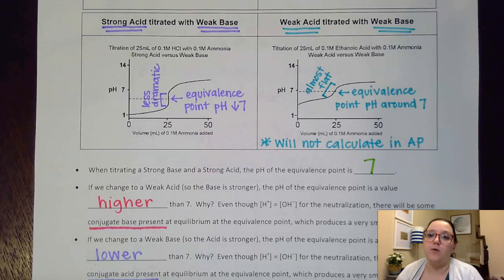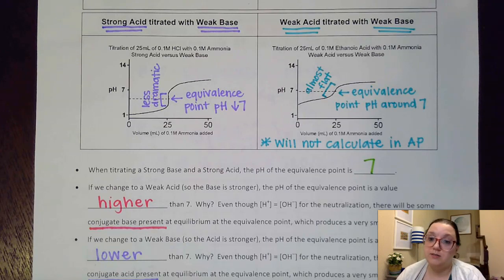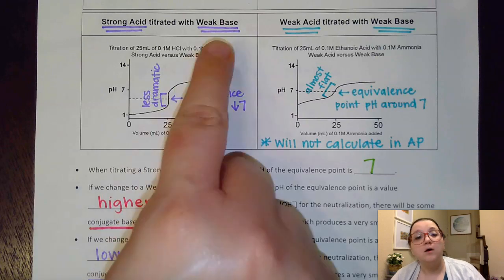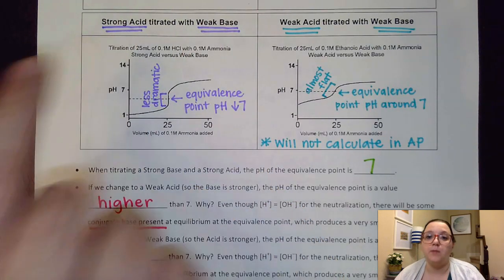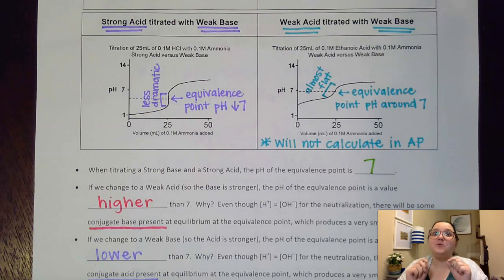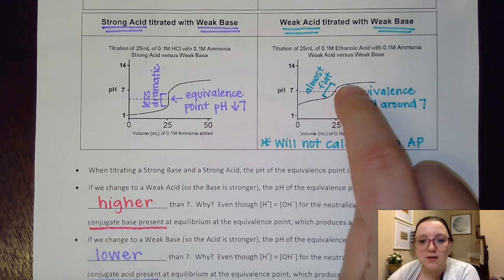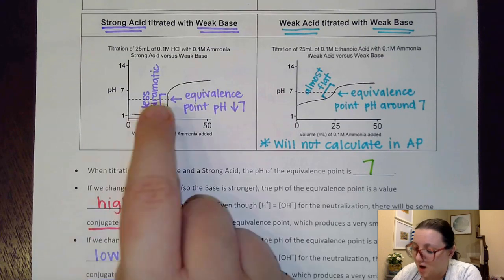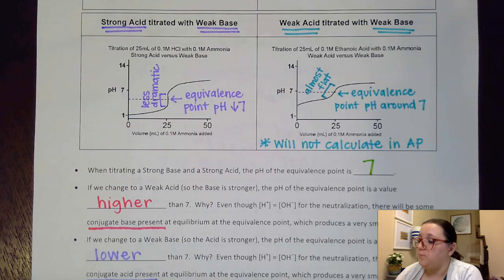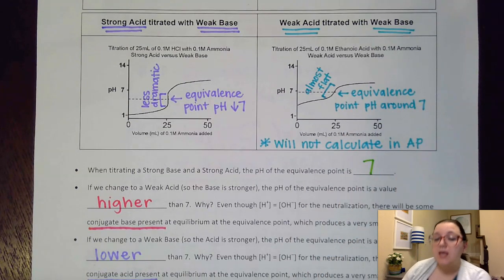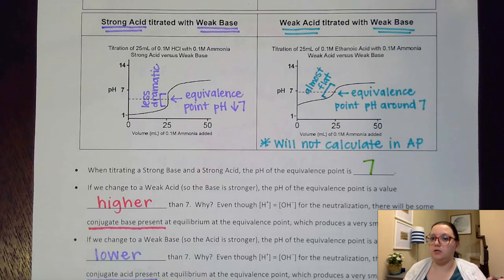Now this last combination — weak acid with weak base — I have really good news: you do not have to calculate this type of graph in AP. These get really complicated. Just like we had equilibrium when we had a weak acid with a strong base, or equilibrium with the weak base with a strong acid, here you would have equilibrium with both things, making for very complicated calculations. However, let's notice the shape — we do get an increase around the equivalence point, but this time it's almost flat, with hardly any dramatic nature to it at all. The pH of the equivalence point ends up around 7, and it depends on whether the weak acid is slightly stronger or the weak base is slightly stronger.